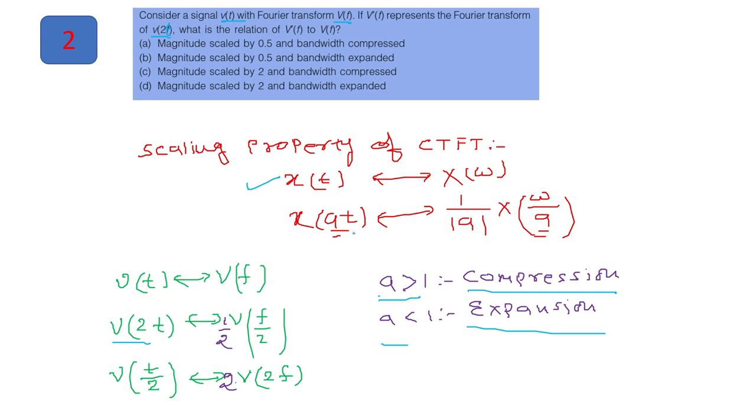If there is compression in frequency, there will be an expansion. So here V of twice of T, the value is compressed, it means that in frequency domain there will be an expansion. So amplitude is 1 by 2. So if you see option number second B is the correct, that magnitude is scaled by 0.5 and that is 1 by 2 and bandwidth is expanded by the factor 2. So this will be the answer for question number 2.